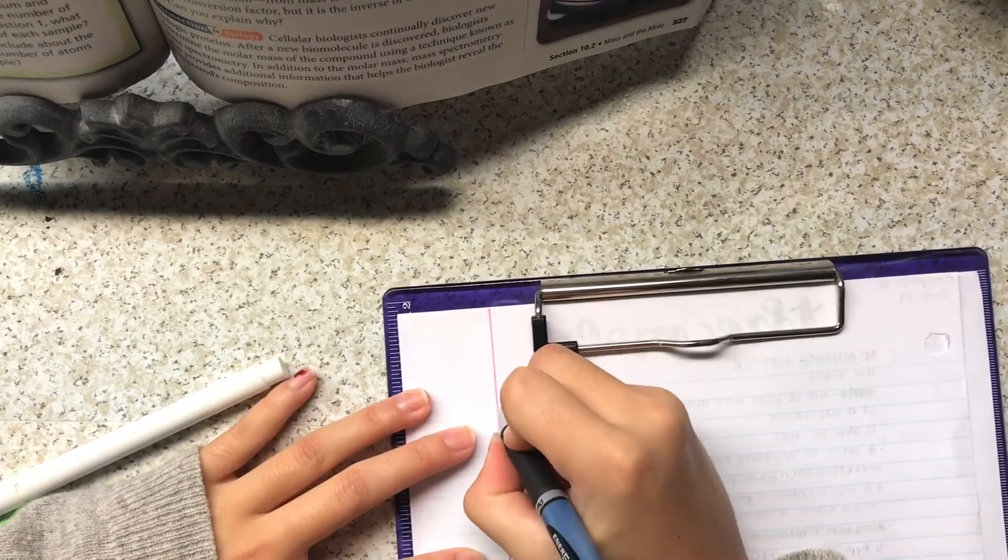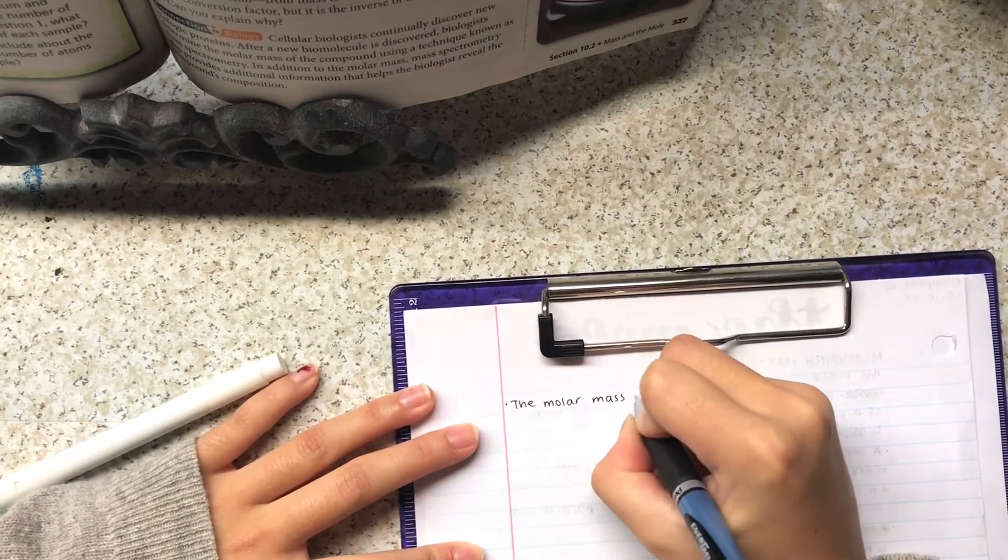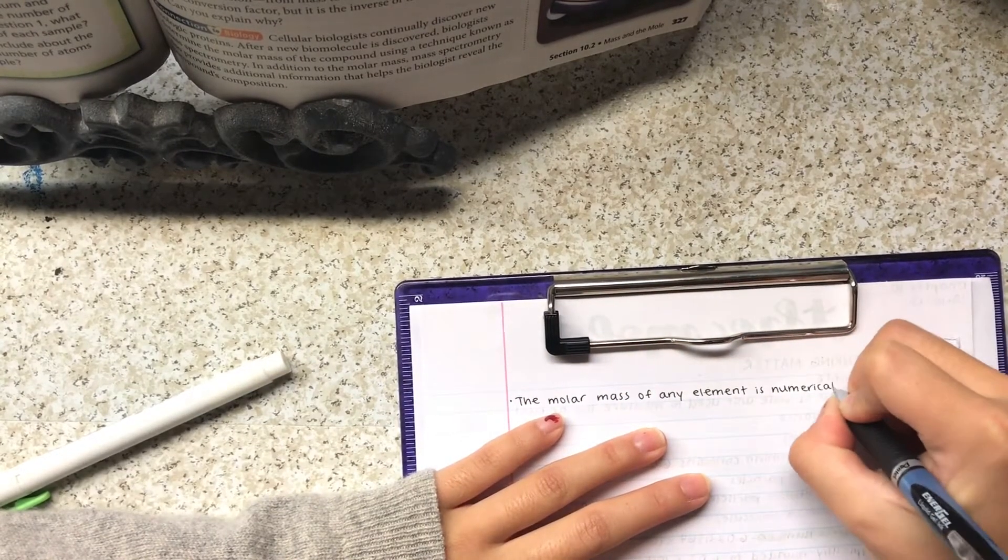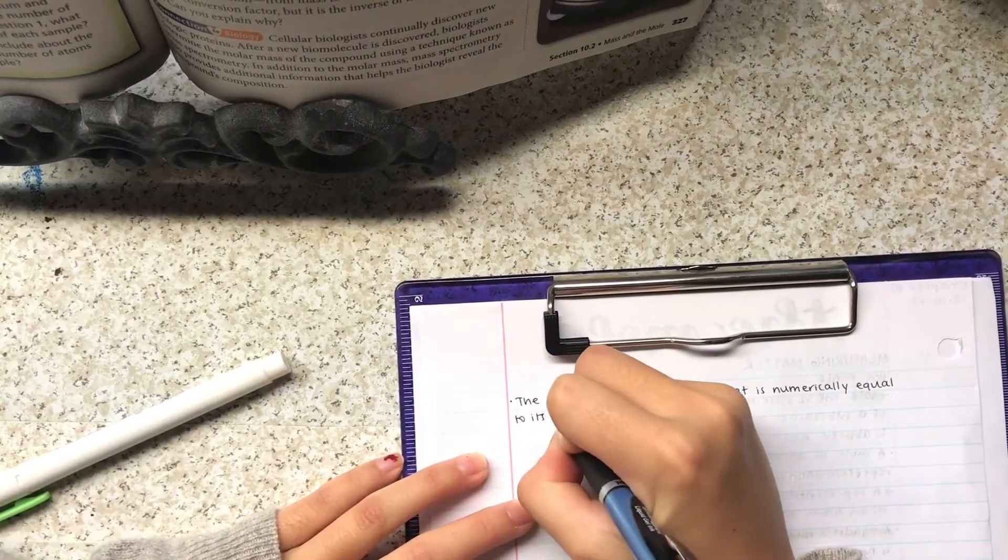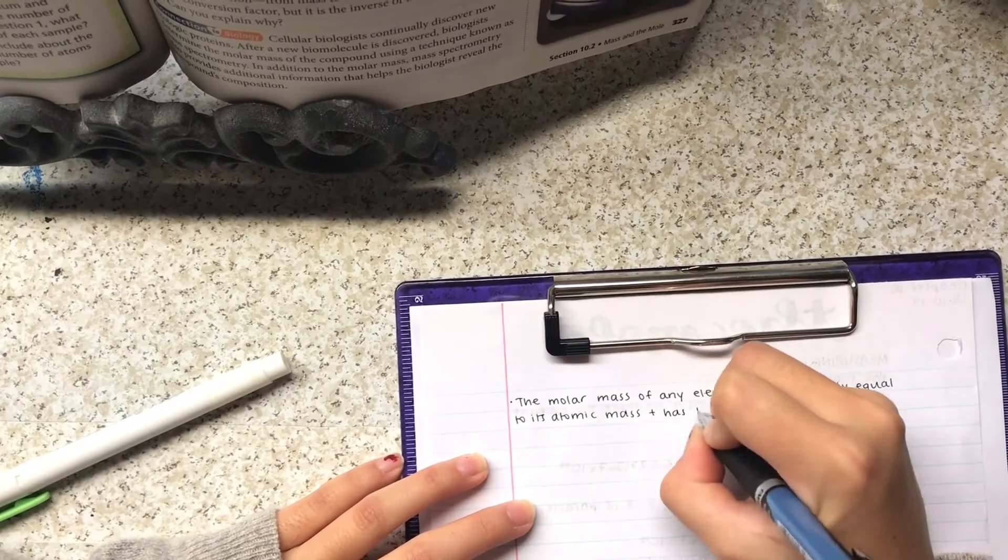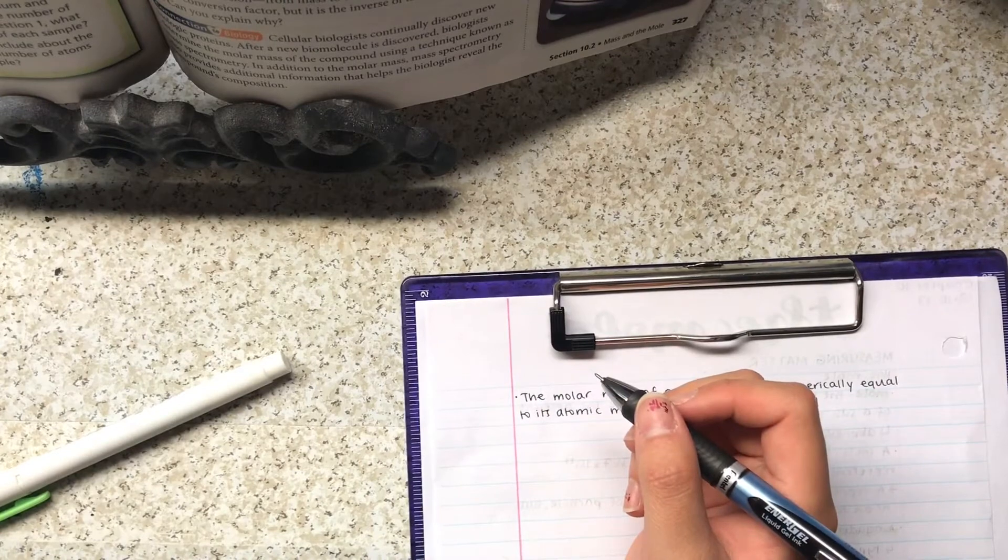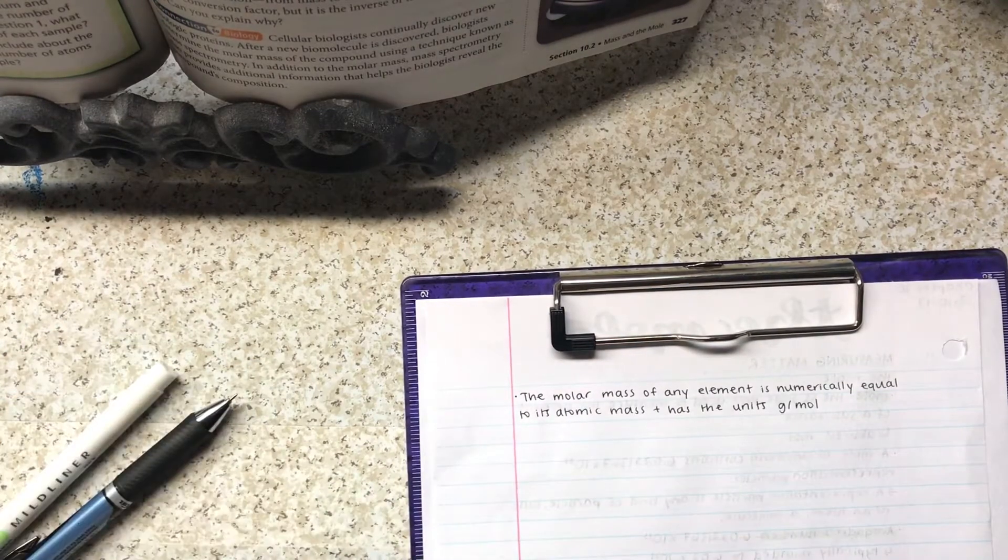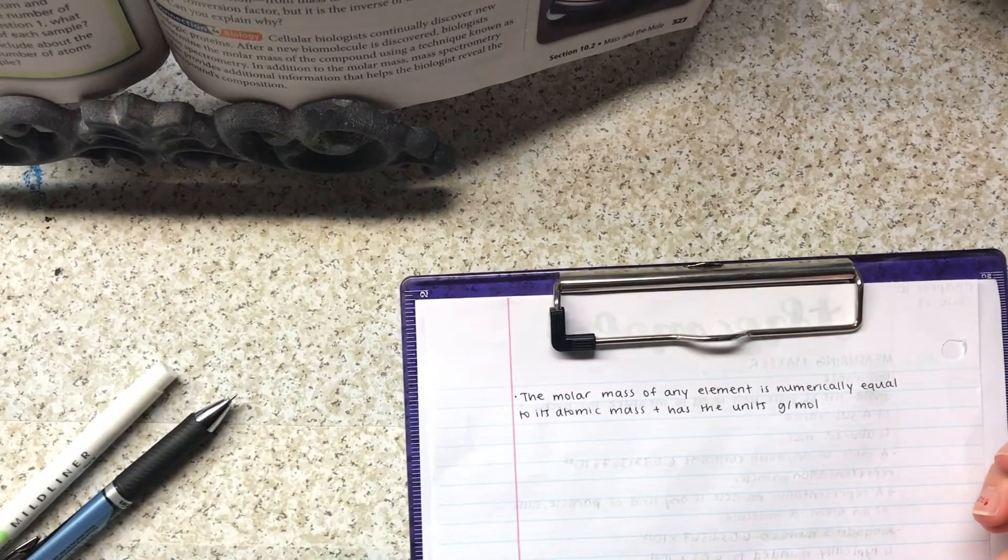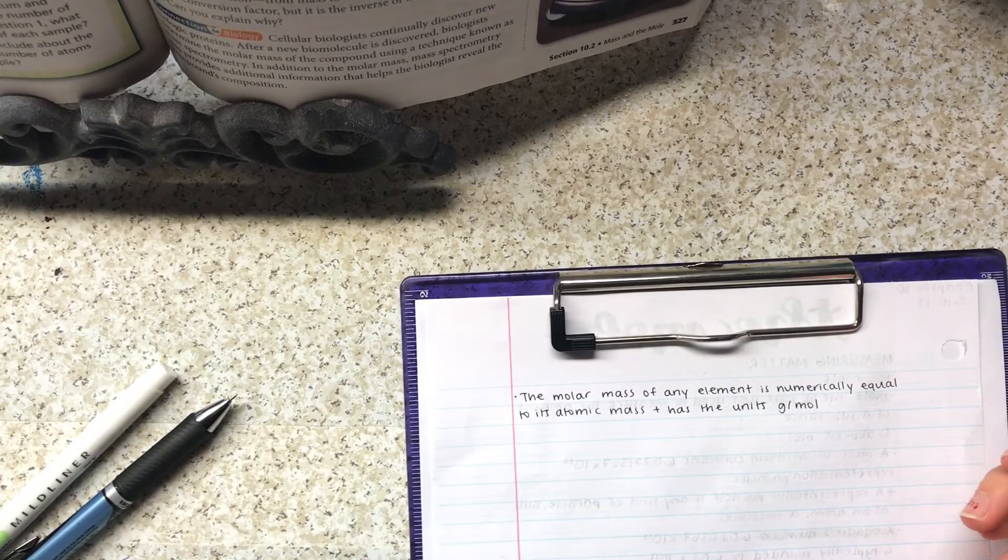And for my header I used a Crayola Super Tips marker. I really like using those for my headers. I think they're like my favorite thing to use for headers. However, I did recently get one of these combo dual brush marker things and I got it in black and I have to say I really like it.